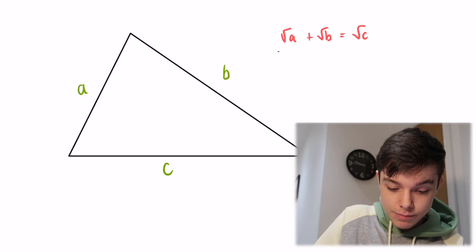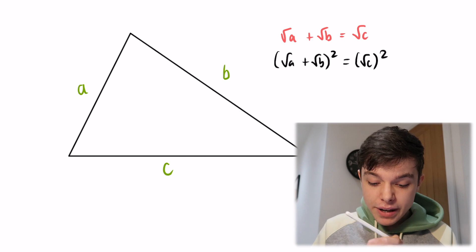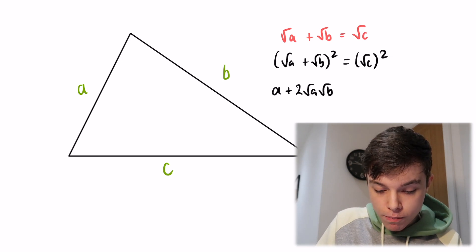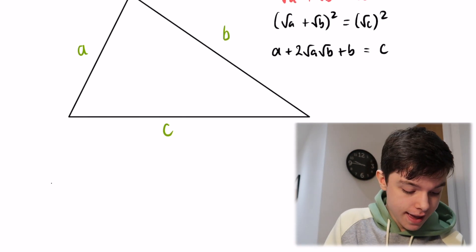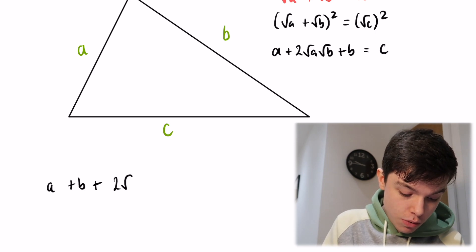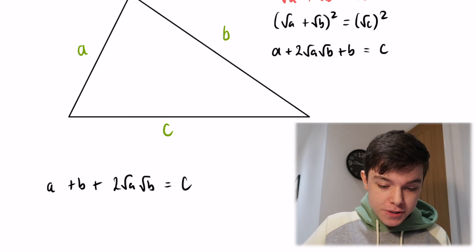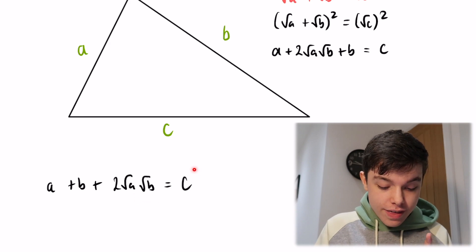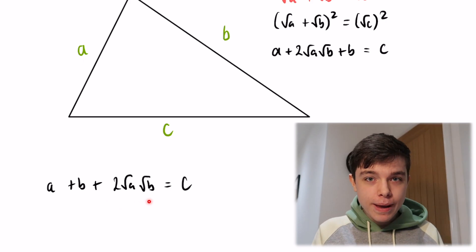I want to get rid of the square roots, so I'll square both sides: the square root of A plus the square root of B, all squared, equals the square root of C squared. Expanding carefully gives: A plus 2 times root A times root B plus B equals C. Rearranging: A plus B plus 2 root A root B equals C. This says A plus B is just a little bit longer than C.